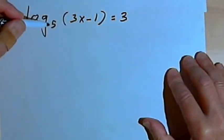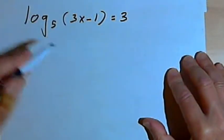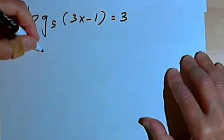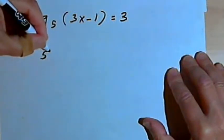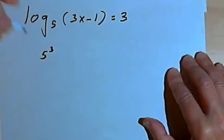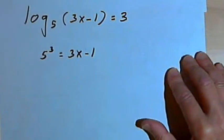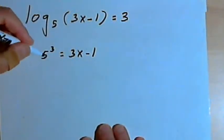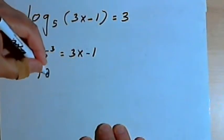So the whole trick here is going to be to convert this into exponential form. I'll take the base, which was 5, and make that the base for my exponent. I'm going to raise that to the third power and set that equal to 3x minus 1. And now it's a fairly easy problem. 5 to the third power, or 5 cubed, is 125.